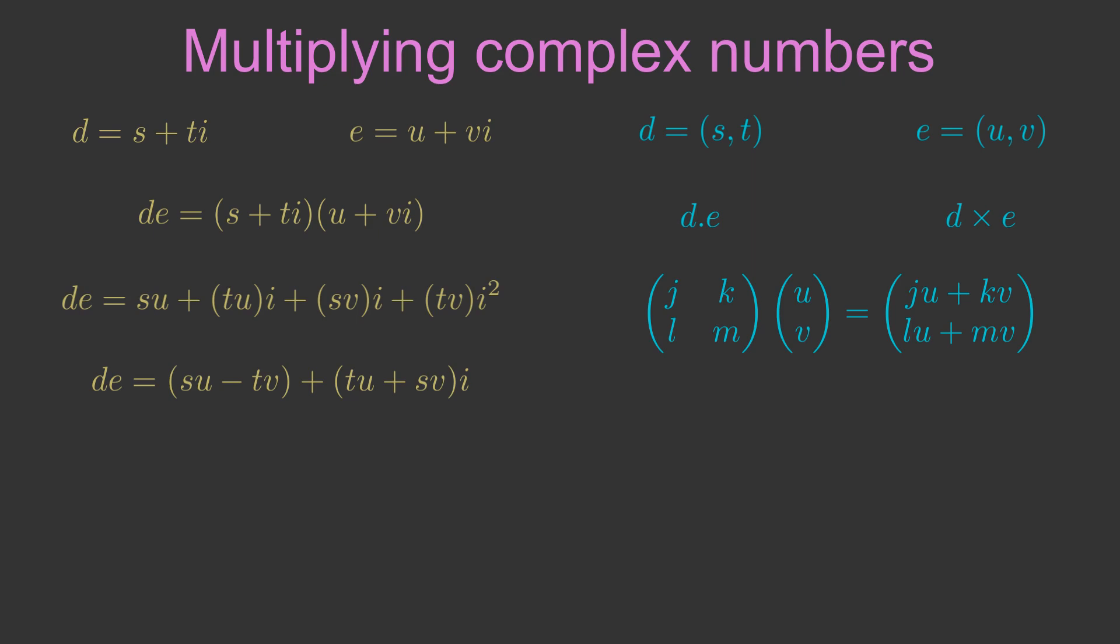If we choose the right values for j, k, l and m, we will get a vector that looks exactly like the previous complex number.